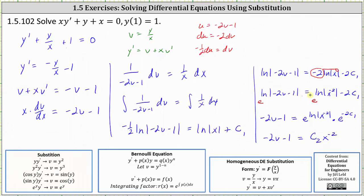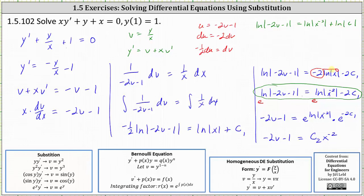One explanation as to why we can drop the absolute value: if we replace minus two times c sub one with natural log c, we'd have natural log absolute value of negative two v minus one equals natural log absolute value of x to the power of negative two plus natural log c. Combining the two logs on the right gives us natural log absolute value of negative two v minus one equals natural log of c x to the power of negative two. Because we have two natural logs equal to each other, negative two v minus one must equal c x to the power of negative two.